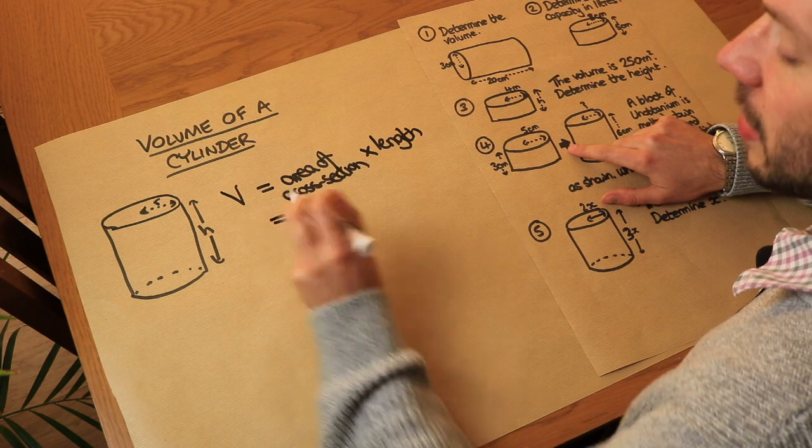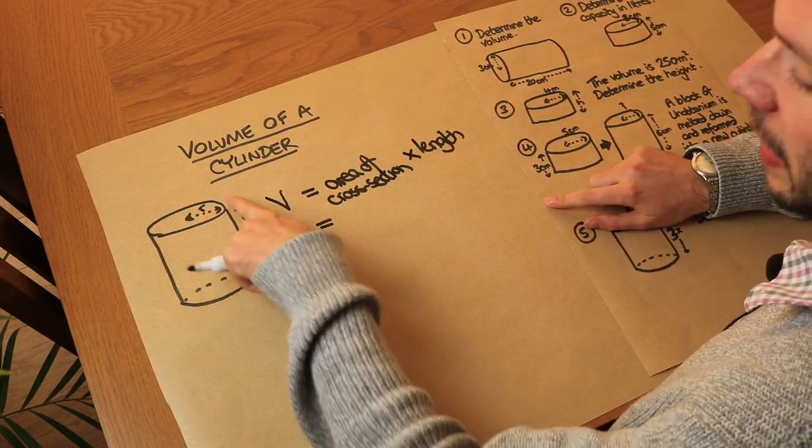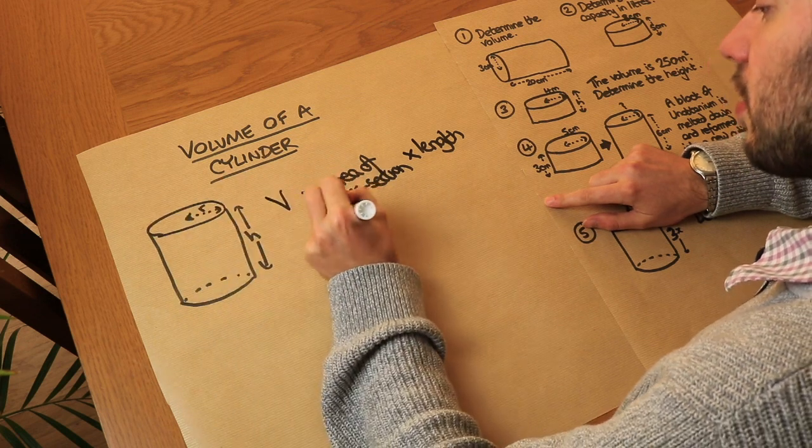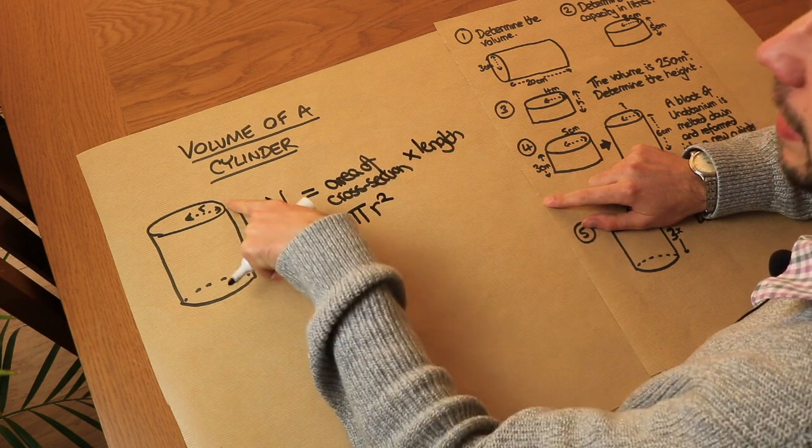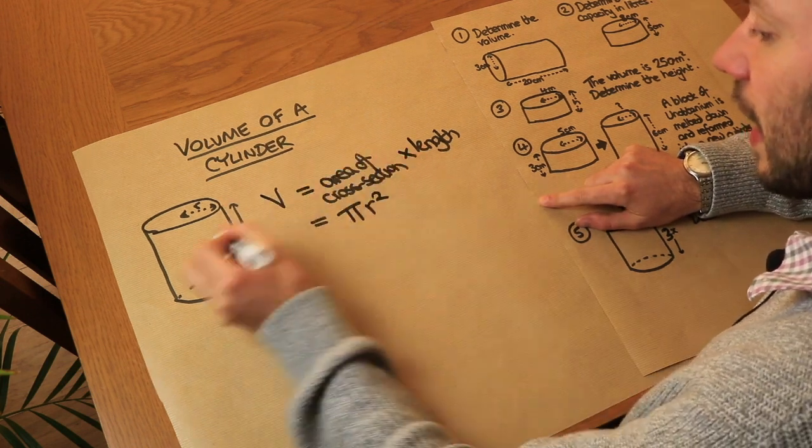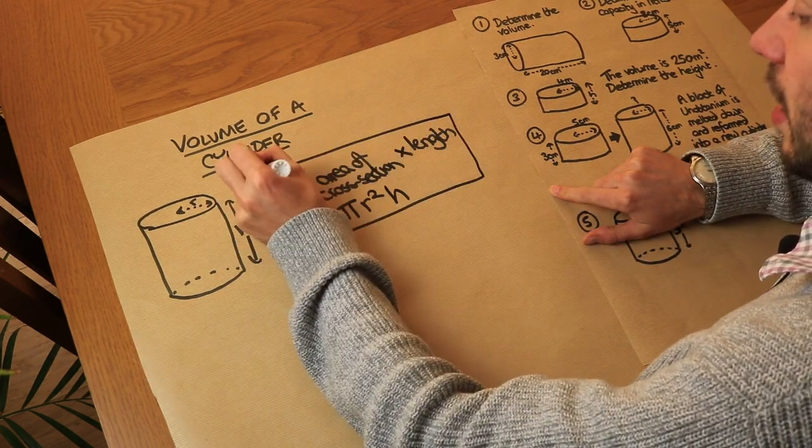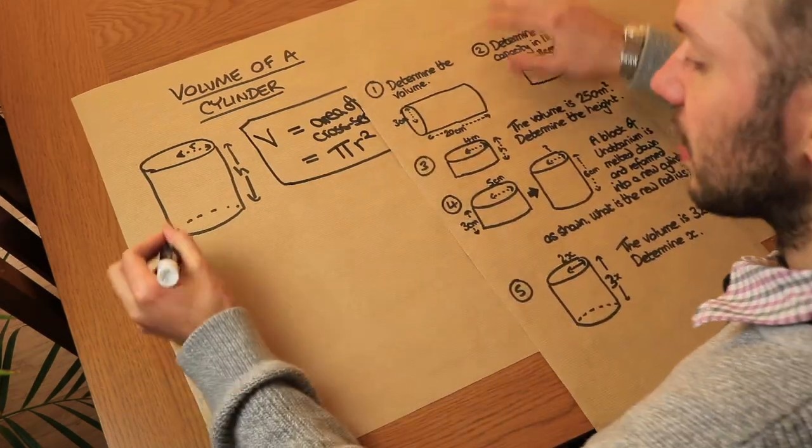Now if we apply that to a cylinder like this, we want the area of the cross section. We can see that is a circle, and what's the area of the circle? It's just pi r squared. And then we're multiplying it by the length, well this is a length here, in this case the height, and that is h. So therefore the volume of a cylinder is pi r squared h.